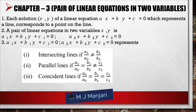Chapter 3: Pair of Linear Equations in Two Variables. Each solution (x, y) of a linear equation AX plus BY plus C equals 0 corresponds to a point on the line. A pair of linear equations is: A1X plus B1Y plus C1 equals 0 and A2X plus B2Y plus C2 equals 0. They represent intersecting lines if A1/A2 is not equal to B1/B2. They represent parallel lines if A1/A2 equals B1/B2 but is not equal to C1/C2. They represent coincident lines if A1/A2 equals B1/B2 equals C1/C2.